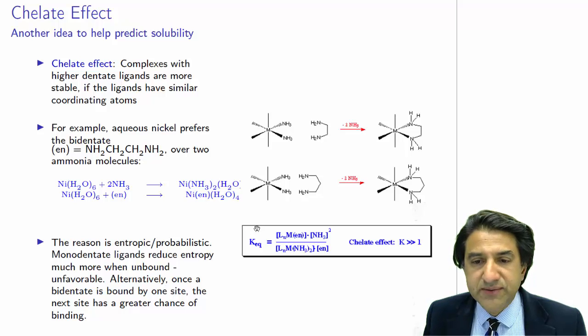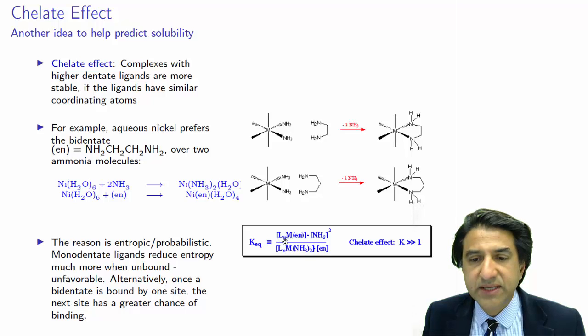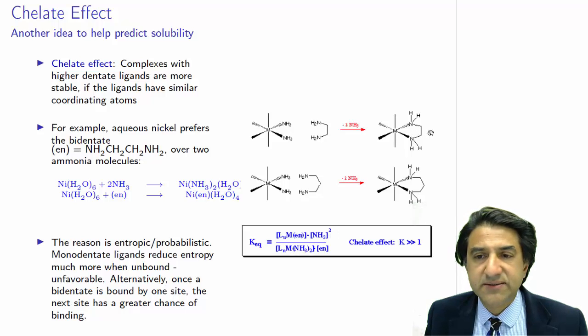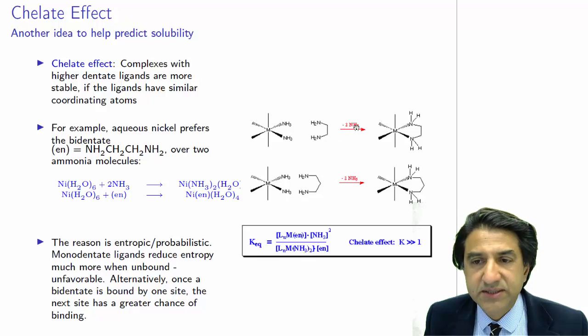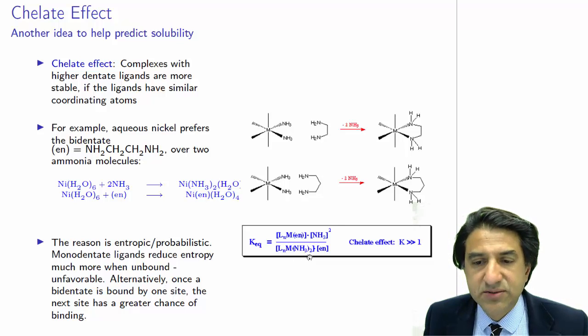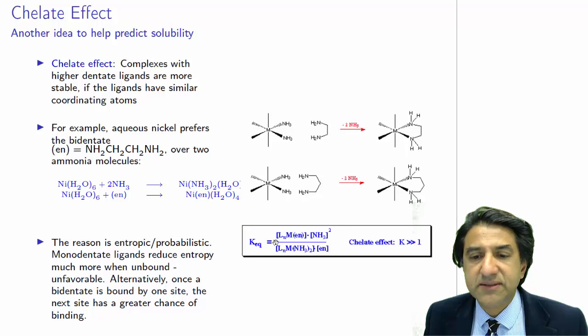Here is the equilibrium constant for this process. MLN ethylenediamine times NH3 concentration squared. We have 2NH3 here on the right-hand side, written as minus 2NH3. And on the left-hand side, we have MLN NH3 2 with ethylenediamine. This is the left-hand side.